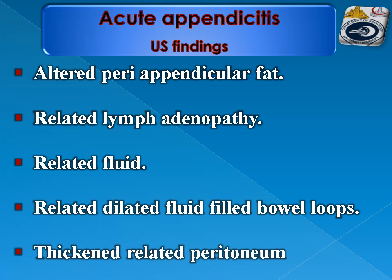Other findings in the surrounding tissues, not in the appendix itself, can include altered peri-appendicular fat, related lymphadenopathy, related fluid, related dilated fluid-filled bowel loops, and thickened related peritoneum.